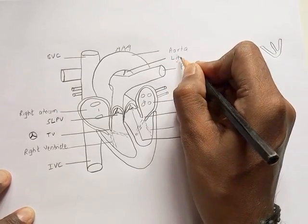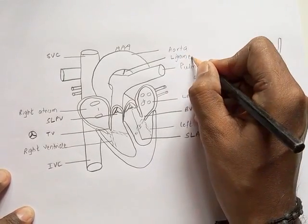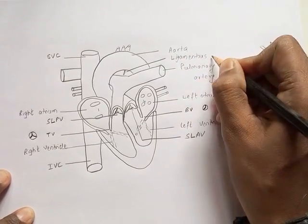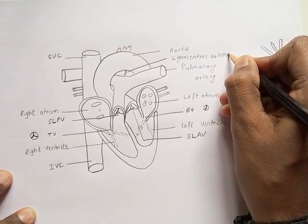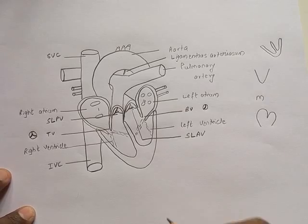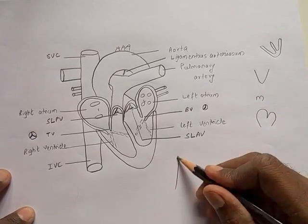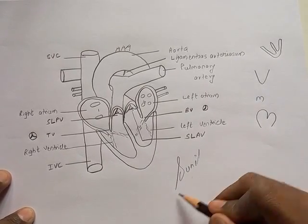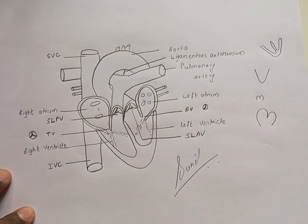Is called ligamentum arteriosum. So in this way you can draw the entire internal structure of human heart. This is Professor Sunil Kumar, thanks for the day.